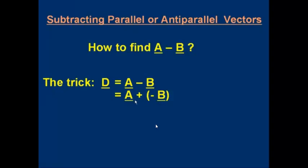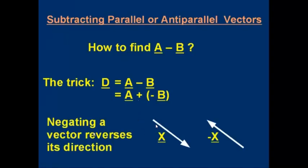How do we find minus B? Negating a vector means changing its sign from plus to minus or vice versa — negating a vector reverses its direction. It doesn't change the magnitude, it just changes the direction. It's like multiplying it by minus one. So if we've got a vector X, minus X is the same size, same type, but the opposite direction.